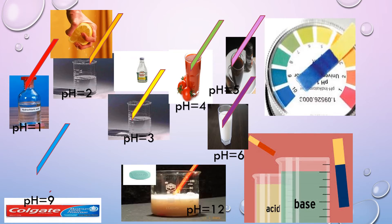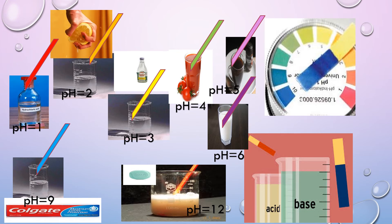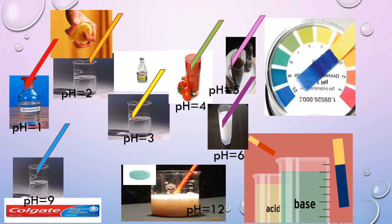If we dip the pH paper in lemon juice or vinegar solution, its color changes to yellow, indicating that its pH is 3. By dipping the pH paper into different solutions, it will indicate different colors. If we compare this color to the pH scale, it tells us how much hydrogen ion the solution contains. Dipping the pH paper into an alkaline solution, its pH will be 9 or 12.